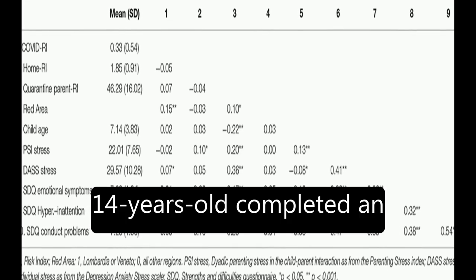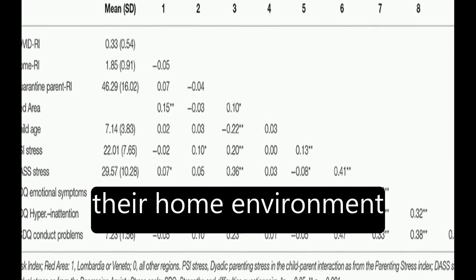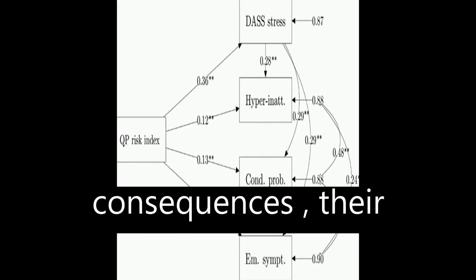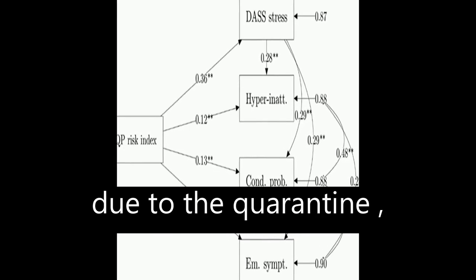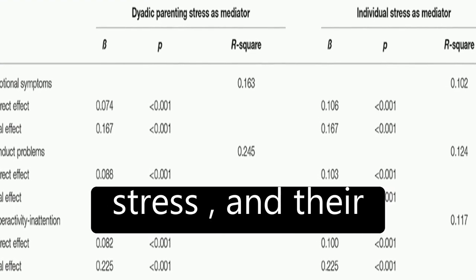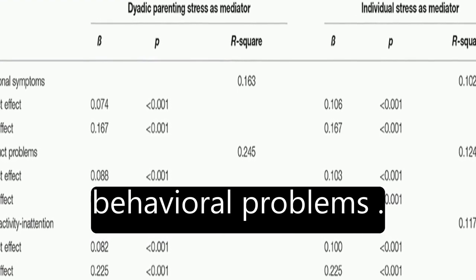Parents of children aged between 2 and 14 years old completed an online survey reporting their home environment conditions, any relation they had to the pandemic consequences, their difficulties experienced due to the quarantine, their perception of individual and parent-child dyadic stress, and their children's emotional and behavioral problems.